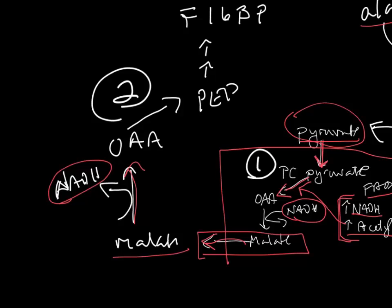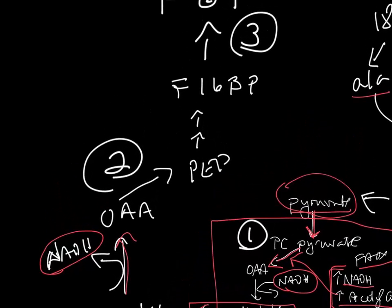Oxalacetate, then, is converted to phosphoenolpyruvate, and this is the second enzyme, enzyme number two, which is called PEPCK.